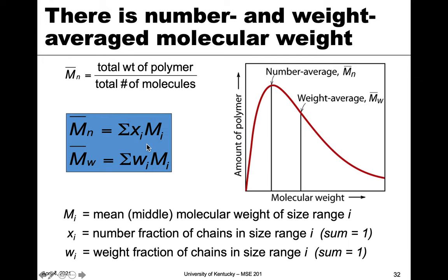The number-averaged and weight-averaged molecular weights are calculated by a summation — sigma of x_i multiplied by M_i. Here, M_i is the molecular weight of a given size range i, and x_i is the number fraction of chains in that size range, similar to a bin in a histogram. We sum up each size range to encapsulate all polymers.